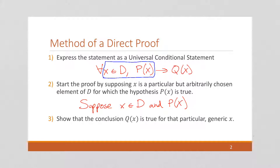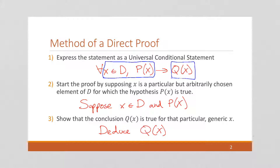And then to conclude, we're going to try to deduce the second part of the conditional statement. The reason we do it this way — if you look at the last video we made, we did a truth table, and we can see how if we follow these steps, then we are guaranteed to demonstrate the truth of the statement that we were proving.